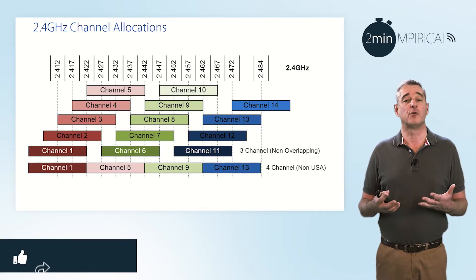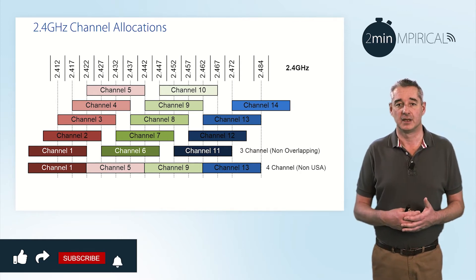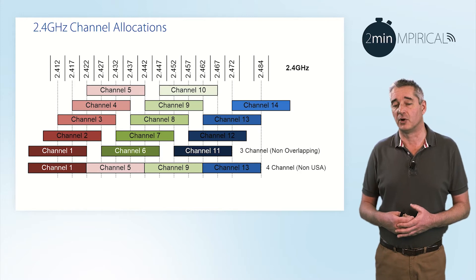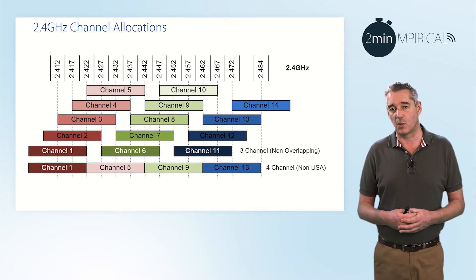Before we look specifically at BSS Colour, we should also recap on the way that a Wi-Fi device will access the medium. Wi-Fi uses a technique called carrier sensing collision avoidance, which means that either the station or the access point will sense the wireless medium and determine whether it is busy or not. In other words, they will apply a threshold, and should the signal level be below the threshold, they will assume that the wireless medium is free and they can access it. Whereas if the signal is above the threshold, they will consider that another station or access point is transmitting, and therefore they should back off and wait for the medium to become quiet.